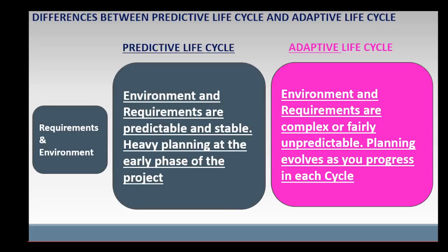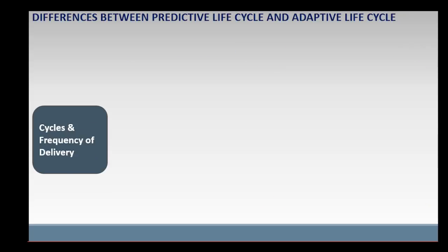Adaptive Lifecycle is used in situations where the environment and the requirements are compressed or fairly unpredictable. There is little upfront planning. Planning is done as you progress in each cycle in the project. For example, the requirements of an e-commerce website evolve throughout the project.